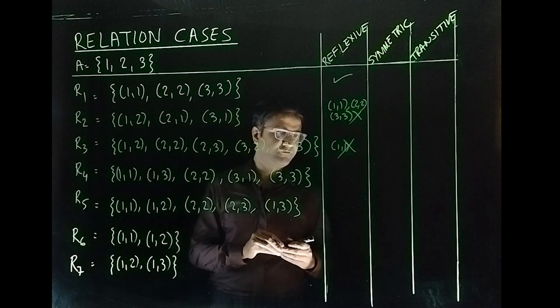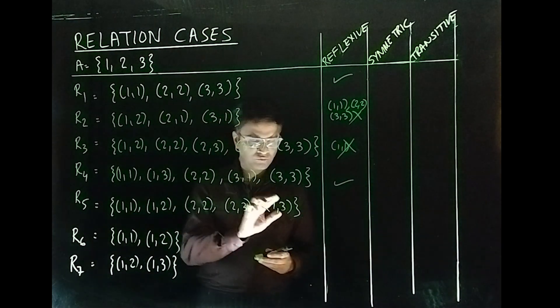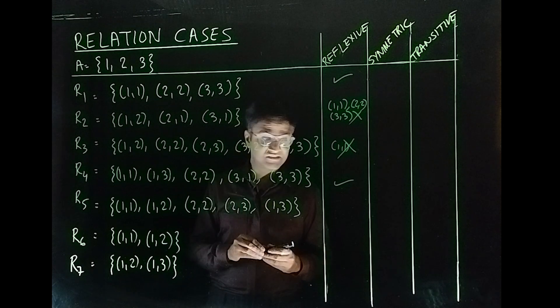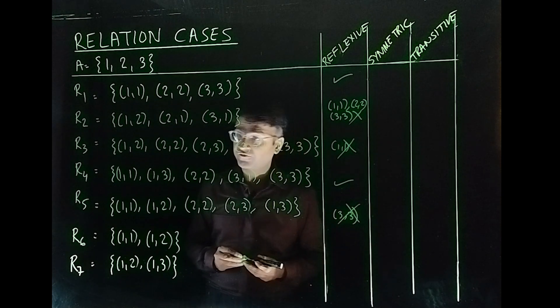We have (1,1), (2,2), (3,3). Fine, this is reflexive. (1,1), (2,2), (1,3). Well, (3,3) is missing. So this is not reflexive either.